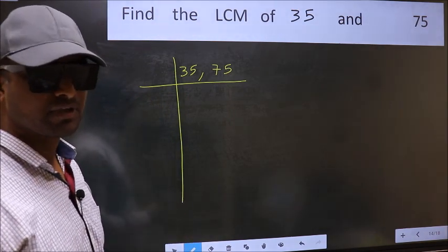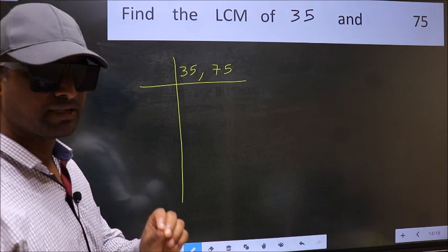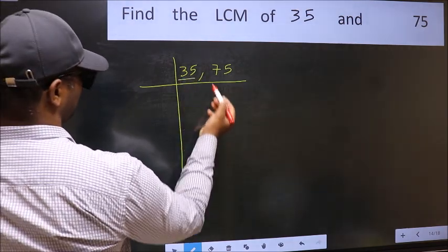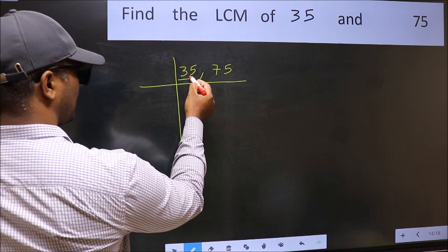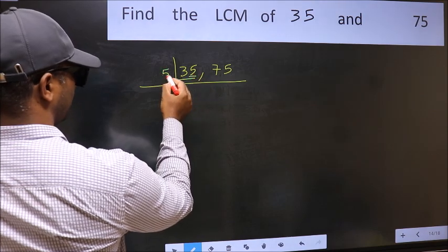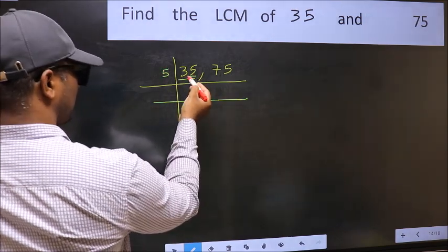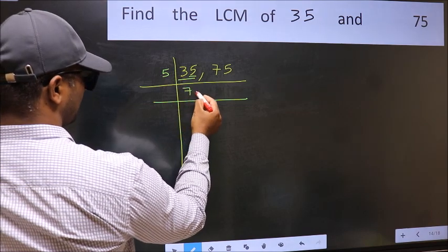Now you should focus on the first number which is 35 here. In this number, last digit 5. So take 5. When do we get 35 in 5 table? 5 times 7 is 35.